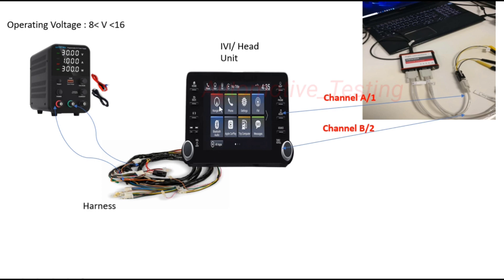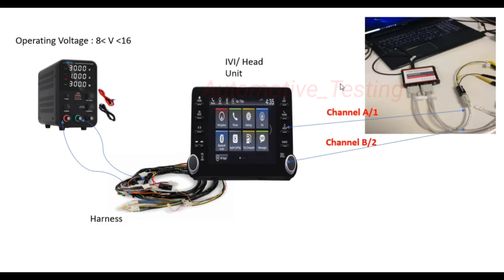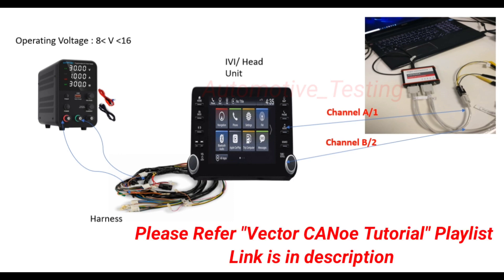This is the overall architecture and connection for bench level testing. Now that the connections are done, the question is how you will turn on the IVI system. You should have the Vector CAN2 software installed on your PC or laptop. Once it is installed, you can do your configuration. I have explained CAN2 software configuration in my previous videos — there is a Vector CAN2 tutorial playlist, and I will provide a link in the video description.